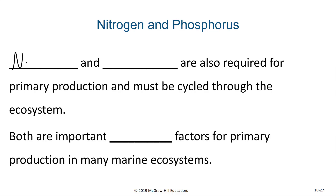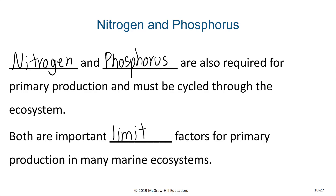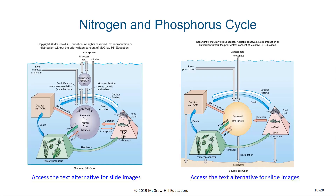Nitrogen and phosphorus are similar to carbon. Both are required for primary production and must be cycled through the ecosystem, and both are important limiting factors for primary producers in many marine ecosystems. The main source of dissolved nitrogen within the water column is from the atmosphere, yet nitrogen gas is not accessible to most organisms. Nitrogen-fixing bacteria and organisms in the water convert atmospheric nitrogen into usable forms such as nitrates, nitrites, and ammonia. Additional inputs come from rivers, dust, and other lithogenous sediments from the continents, as well as from organisms living within the ecosystem.